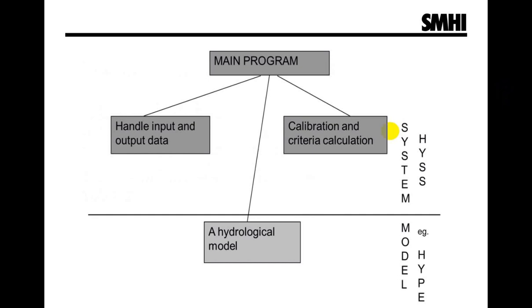The model code is written in Fortran 95 and can be compiled for Windows or Linux with the G Fortran or Intel compilers. The source code is published under the GNU Lesser General Public License and publicly available at the HYPE website. The code is divided into two main parts.